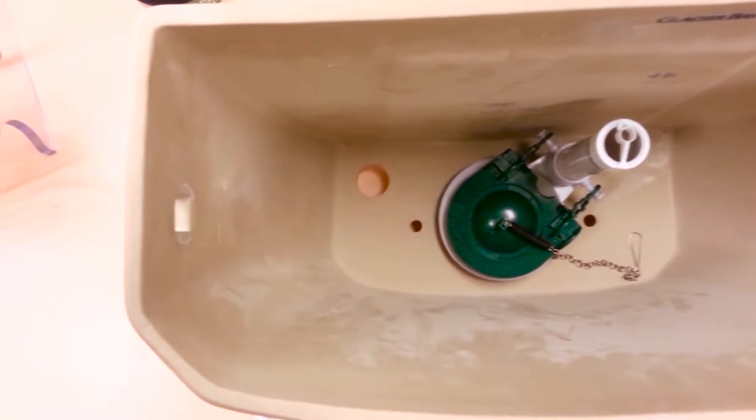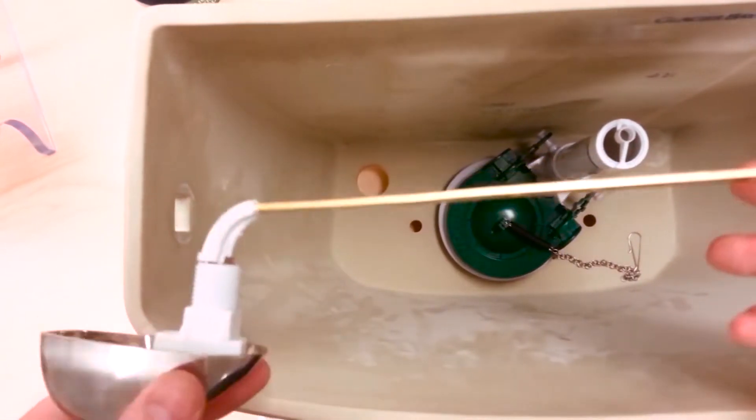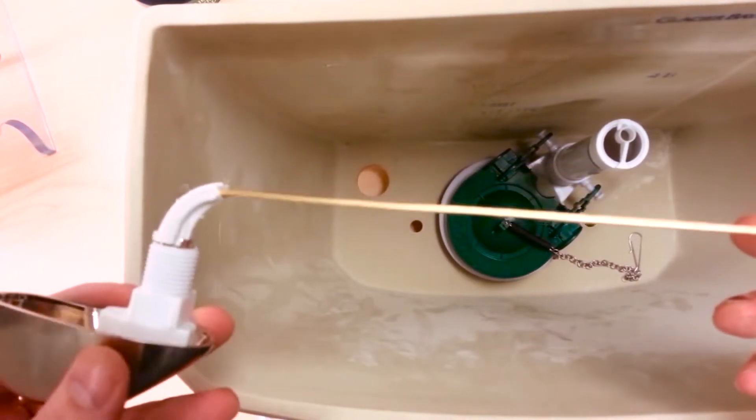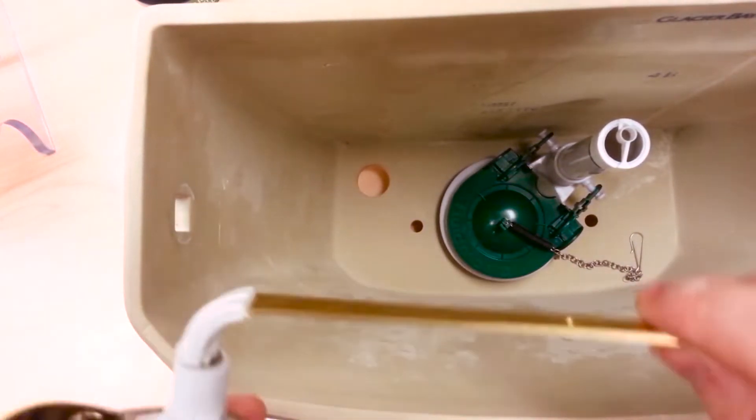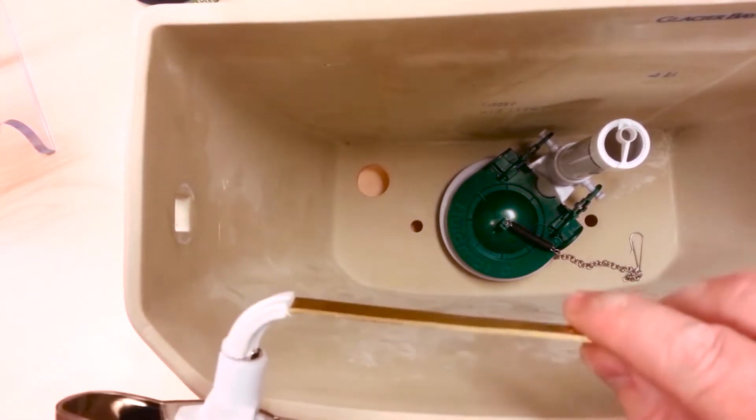Hey ladies and gentlemen, this is just a quick tutorial on how to install the Fluidmaster 683 through 687 tank lever into your side mount toilet tank. This rule also applies for corner mount tanks, I just don't have to bend it quite so far.